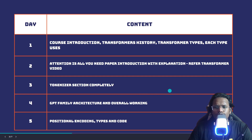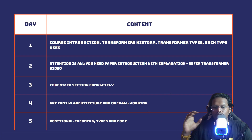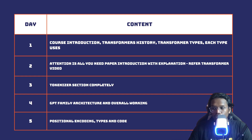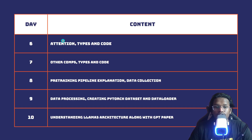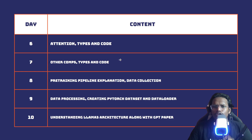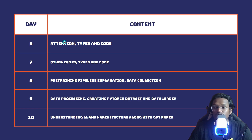Once you have that, we'll move on to positional encoding in day five — covering the theory, the types of positional encoding, and coding those types to understand how they work mathematically. A similar approach happens in day six with attention. In day seven we cover the remaining components: feed-forward networks, projection layers, layer normalization — all types, theory, and code.